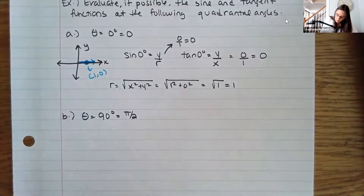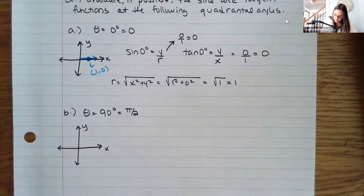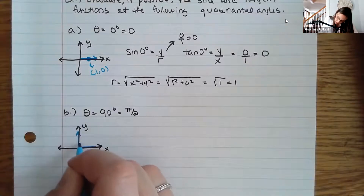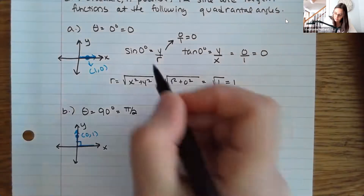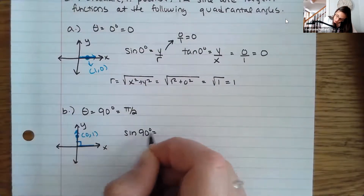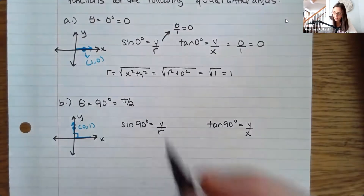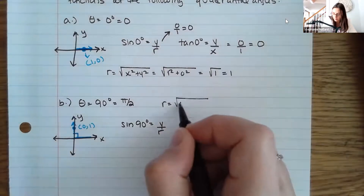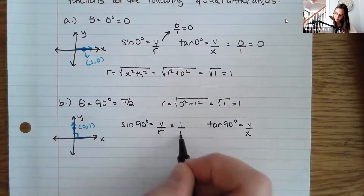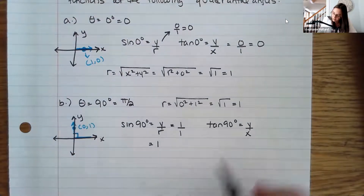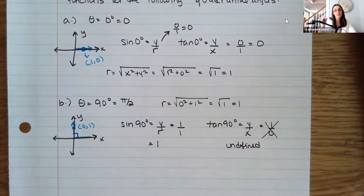Let's try theta equals 90 degrees or pi over 2. The terminal side goes up to 90 degrees, and I can let P be any point — I'll use (0, 1). Sine of 90 degrees is y over r. Tangent of 90 degrees is y over x. Finding r: 0 squared plus 1 squared gives square root of 1, so r equals 1. My y value is 1, so sine is 1 over 1, which equals 1. Then tangent is 1 over 0, which doesn't work — so this one is undefined. Tangent of 90 degrees is undefined.